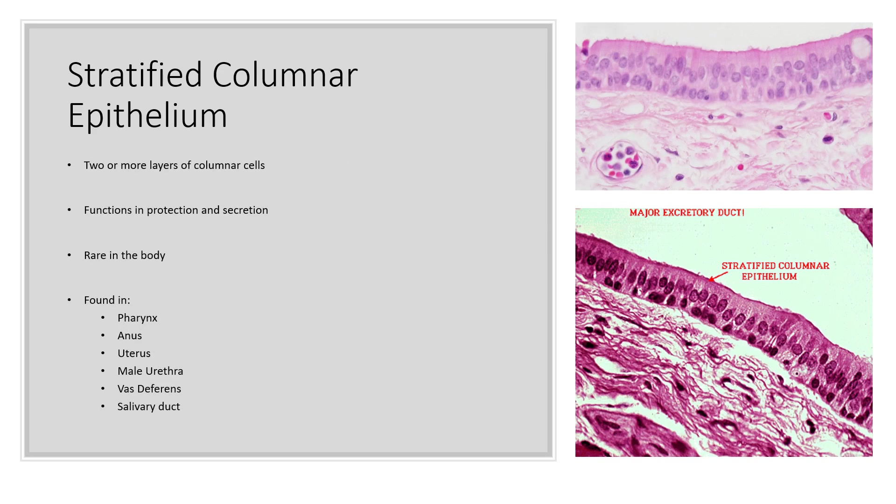Stratified columnar epithelium consists of two or more layers of columnar cells — those rectangular cells. These function in protection and secretion, and they're kind of rare throughout the body, but you can find them in the pharynx and the anus, the female uterus, the male urethra, the male vas deferens — which is the duct that sperm travels through before being released — and the salivary duct as well.